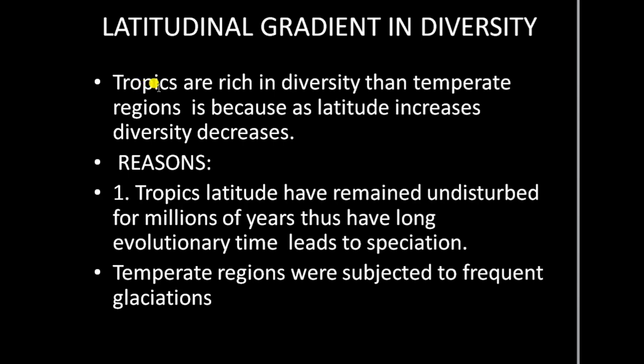What are the reasons for the greatest biodiversity in the tropics compared to temperate regions? There are mainly three reasons. Reason number one: tropical latitudes have remained undisturbed for millions of years. This undisturbed environment provides a long evolutionary time, which leads to speciation — the formation of new species according to Charles Darwin. In the tropics, as the environment remains undisturbed, there is a greater chance for speciation, which is why species diversity increased in tropical regions.